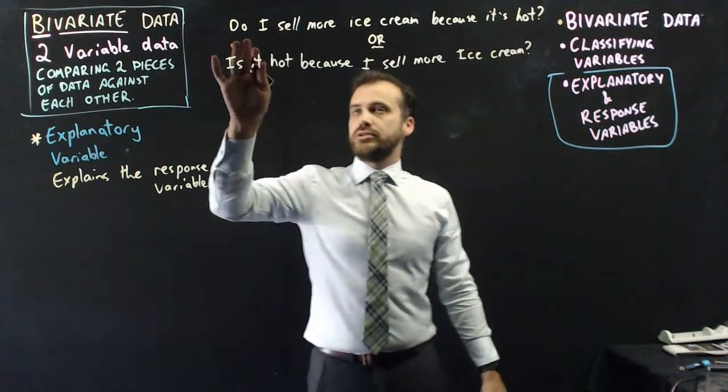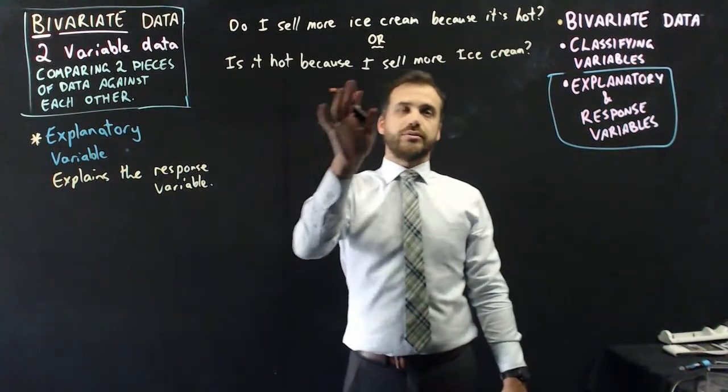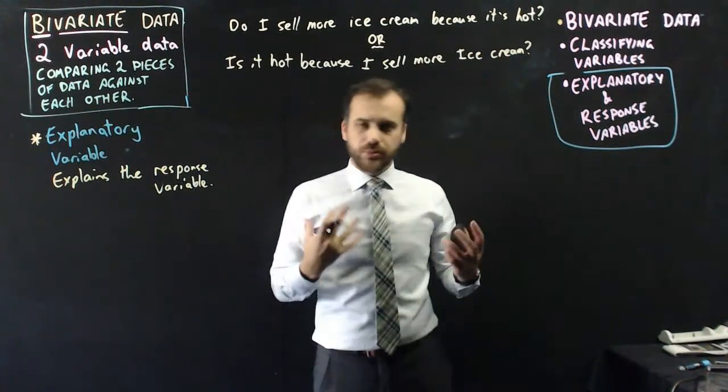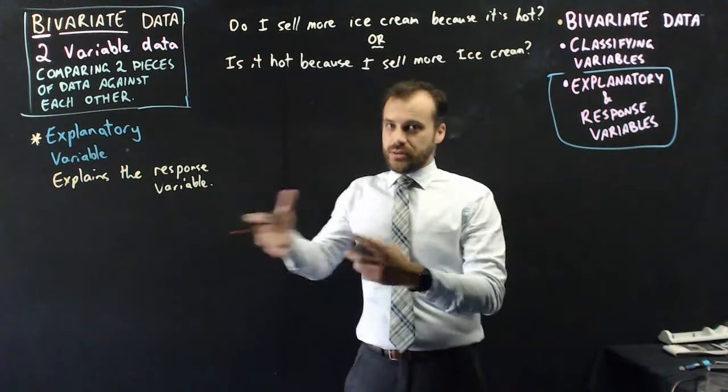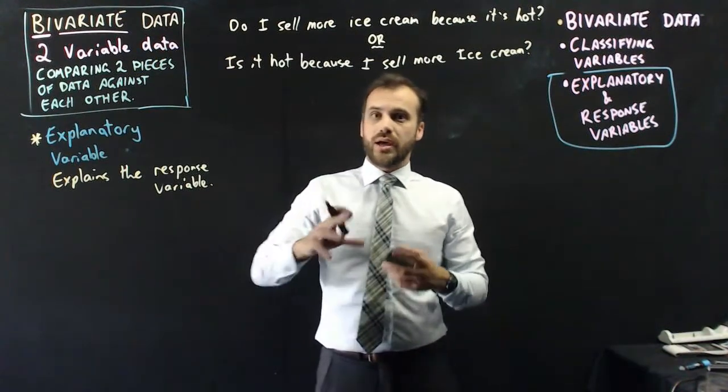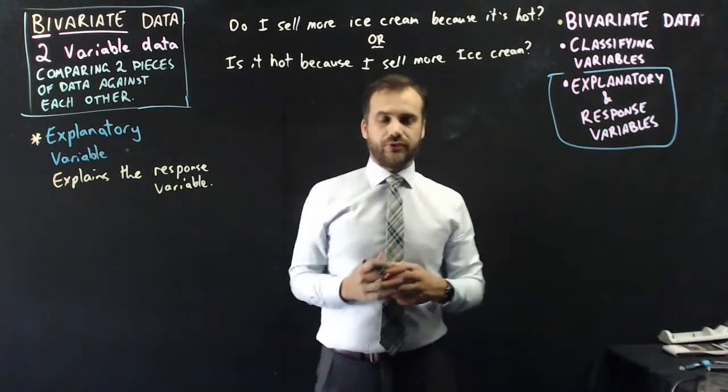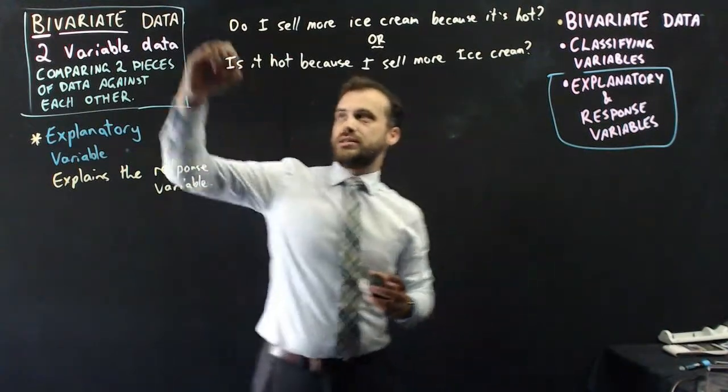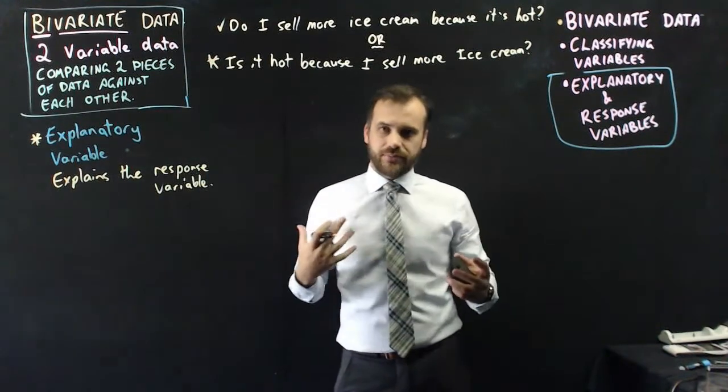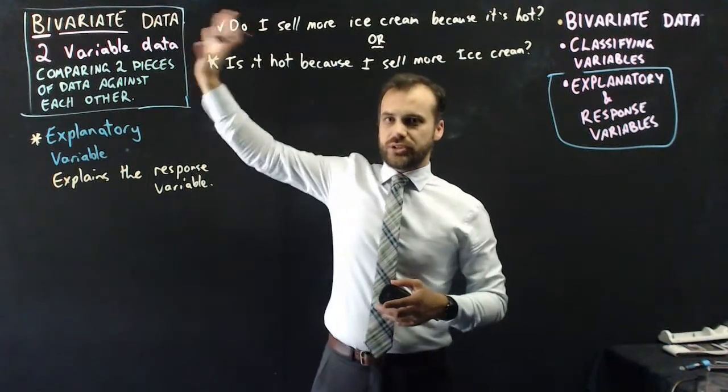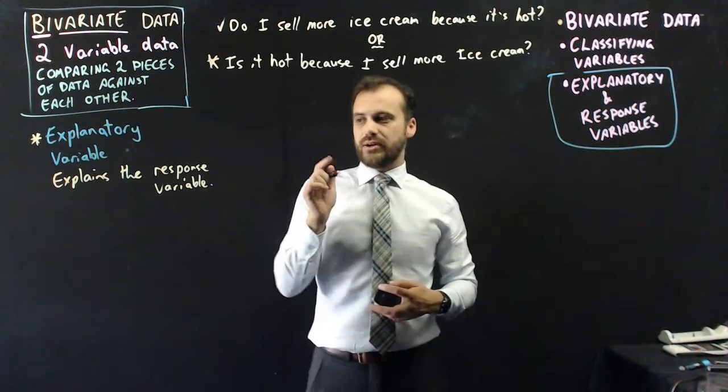So when we're dealing with bivariate data, we're going to have an explanatory variable and a response variable. Now the explanatory variable explains the response variable. Now this is a little bit strange, right? So let me explain with our ice cream temperature example. So here's an obvious question: Do I sell more ice cream because it's hot? Or is it hot because I sell more ice cream?